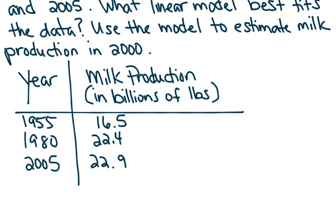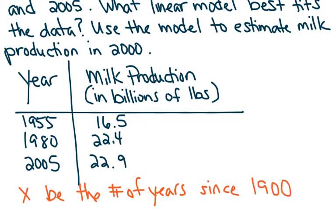We're going to let X be the number of years since 1900, because that's what the book uses. Sometimes we give you a starting year, and sometimes you just use whatever the first year is. I'll try to remember to give you a starting year so that everybody gets a consistent answer. If X is the number of years since 1900, then this will be 55, this will be 80, and this will be 105. And that's what we'll put in list one.